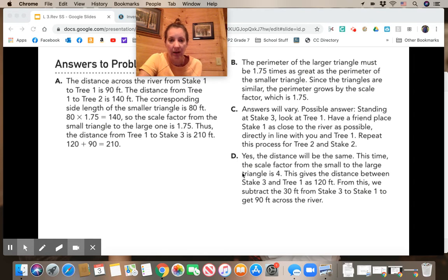It doesn't matter the order really, it just was kind of an idea of how you thought they might go about it. In question d, you should have found that the distance was the same. This time the scale factor from the small to the large was 4. This gives the distance between Stake 3 and Tree 1 as 120. From this we would subtract the 30 feet that was from Stake 1 to Stake 3 and you would get 90 feet.